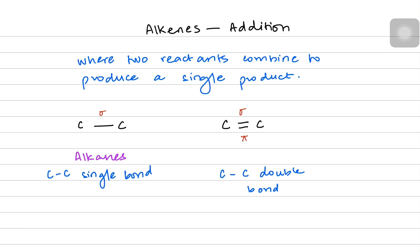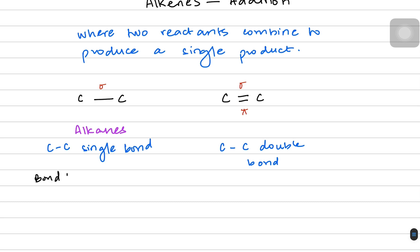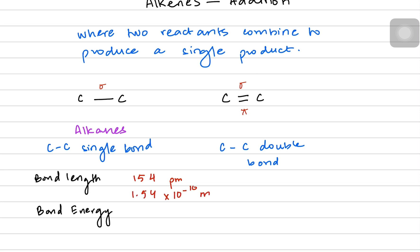When we compare the bond lengths and bond energies, we can see why alkenes are more reactive. The carbon-carbon single bond has a bond length of 154 picometers, which is approximately 1.54 × 10⁻¹⁰ meters.